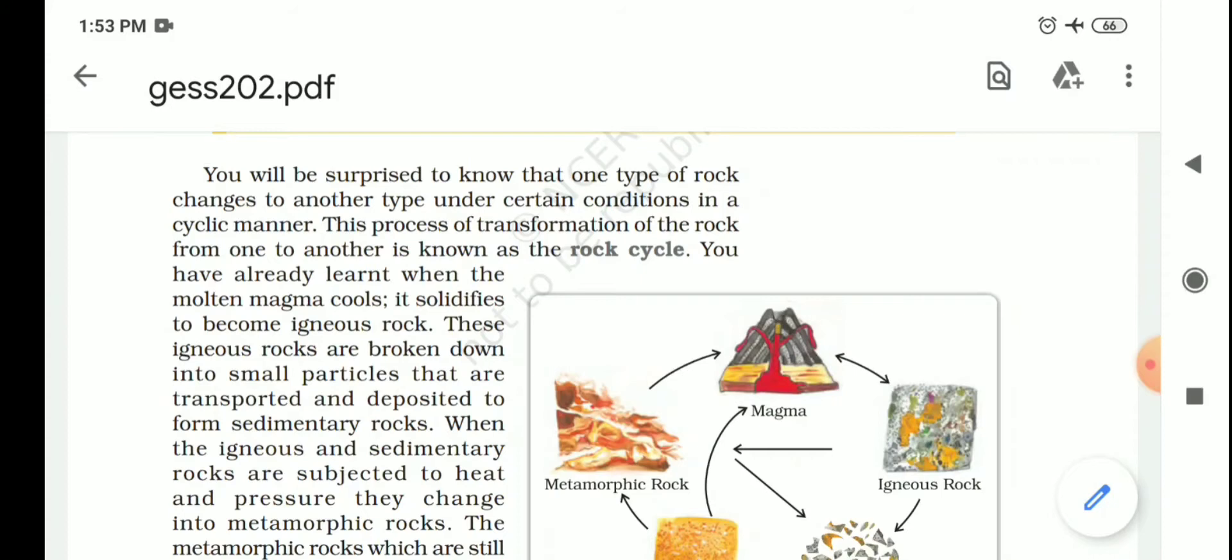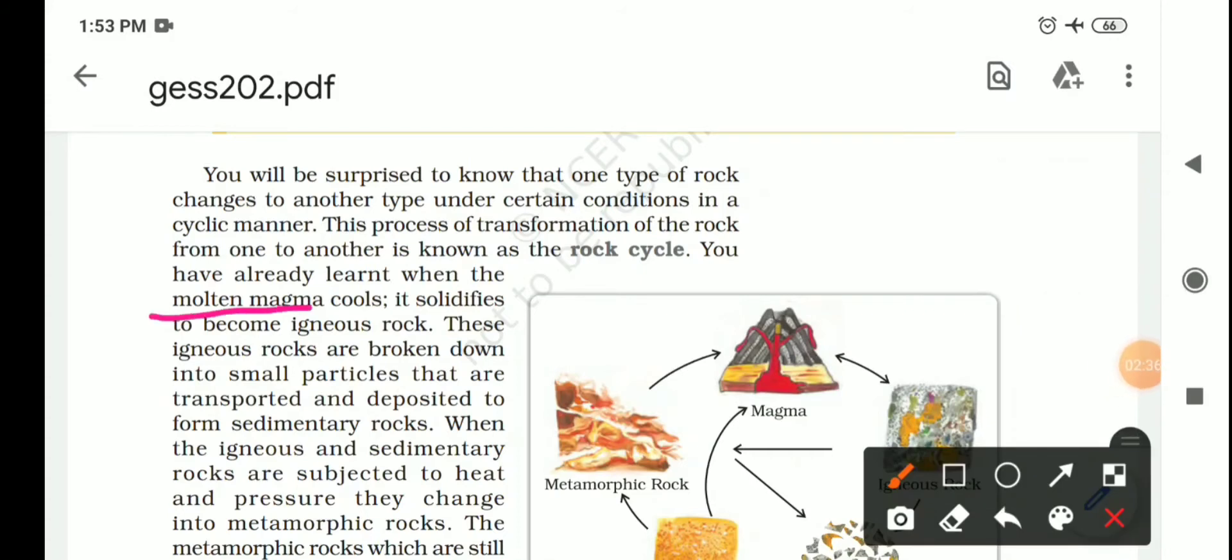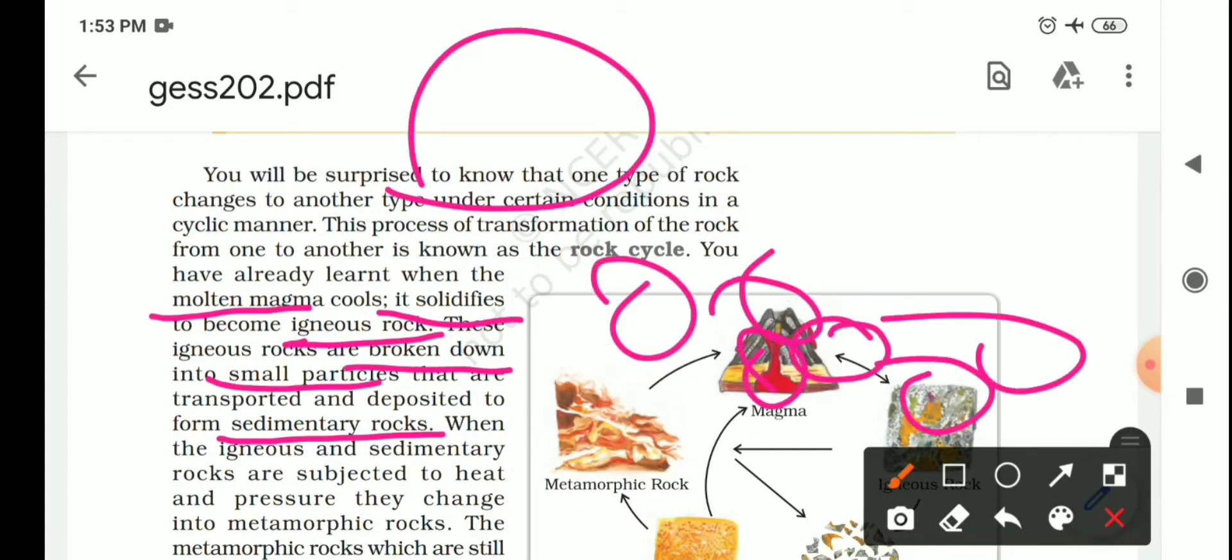This process is the transformation of rock from one form to another, so we call it the rock cycle. You have studied about molten magma. How do we get igneous rocks? When the molten magma is cooled and then it changes to solid form, then which rocks do we get? Igneous rocks. How do we get sedimentary rocks? They become sedimentary rocks when igneous rocks are broken down into small pieces that are transported and deposited to form sedimentary rocks.